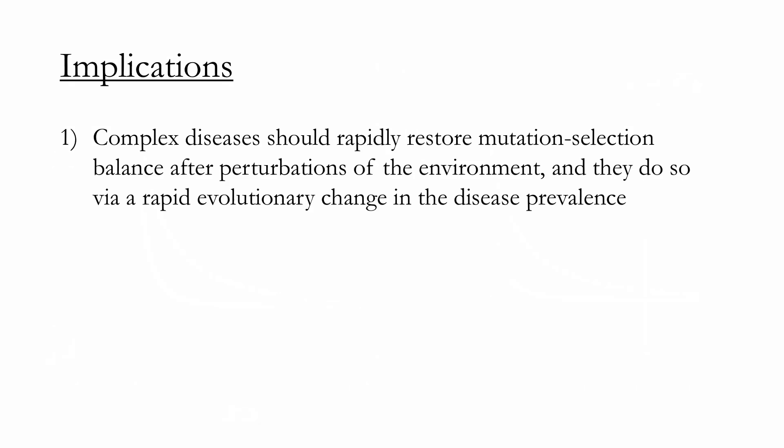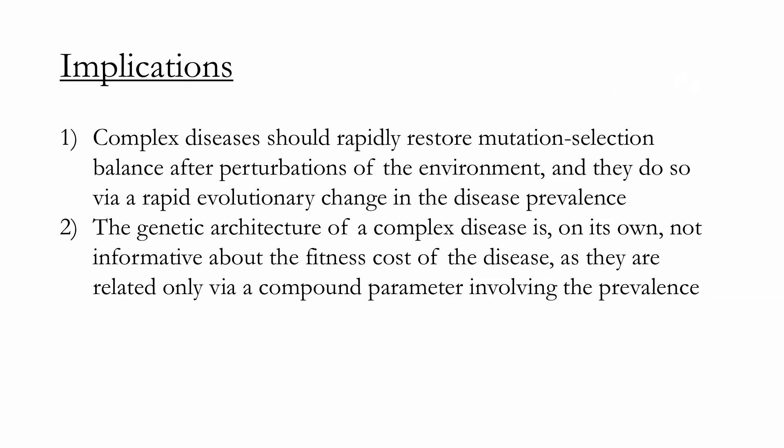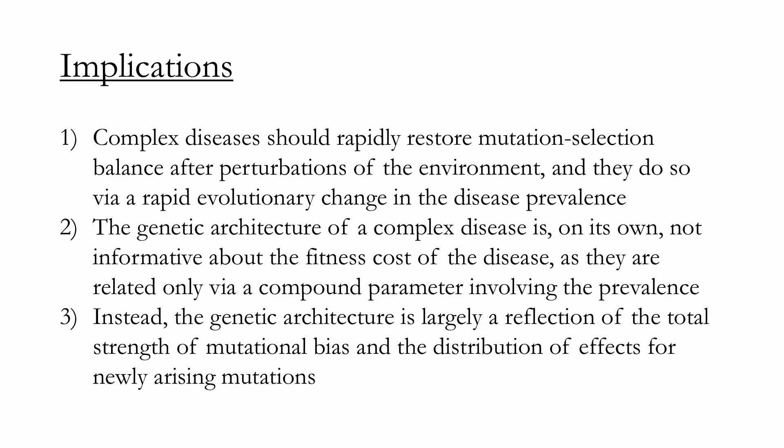If you take three things away from this talk: First, complex diseases should rapidly restore mutation-selection balance after environmental perturbations, doing so by a rapid evolutionary change in prevalence. Second, the genetic architecture of complex disease is on its own not informative about the fitness cost of disease, as they're related only via this compound parameter of the prevalence. Third, what this implies is that the genetic architecture under this model is largely a reflection of the total strength of mutational bias towards increased disease risk and the underlying distribution of effects from newly arising mutations — a fundamental biological question. This is qualitatively different from what you'd expect for a quantitative trait under stabilizing selection, where the strength of selection really matters for the genetic architecture.